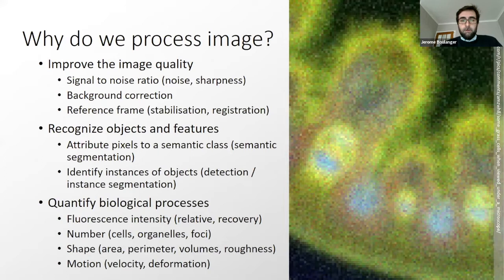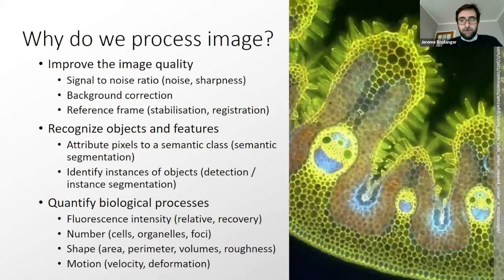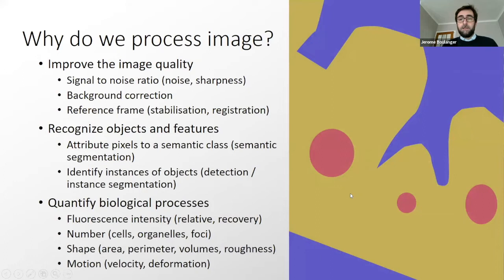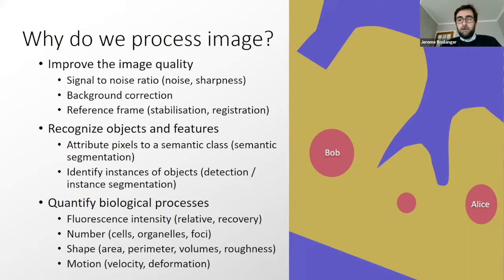We want to recognize objects and features. We want to attribute a semantic class — each pixel is associated with a class which is color-coded. We want to identify instances of objects; for example, here we have Alice and Bob. We identify distinct objects in the image, and the simplest way to do this is to find connected components.